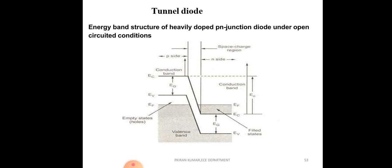Due to the heavily doped nature of the tunnel diode, the depletion width is very narrow compared to a normal PN junction diode. Due to this narrow width and heavy doping, some charge carriers move by tunneling through the junction from one region to another — that is, from the P region to the N region and from the N region to the P region.